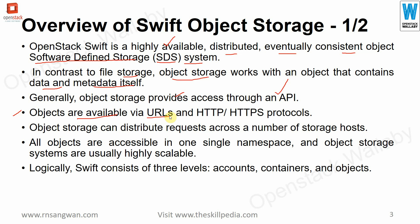Objects are available via URLs using HTTP or HTTPS protocols. Object storage can distribute requests across a number of storage hosts, and all objects are accessible in one single namespace. Object storage systems are usually highly scalable — you can keep adding storage, building a pool available for Software as a Service or Infrastructure as a Service for your customers and tenants.